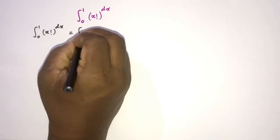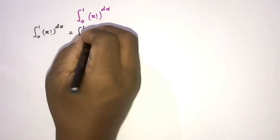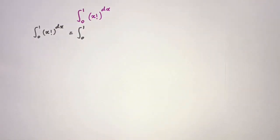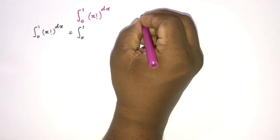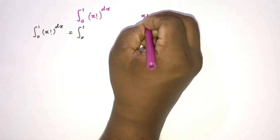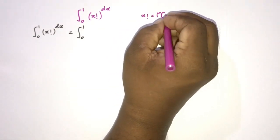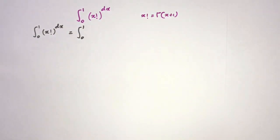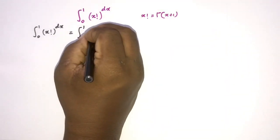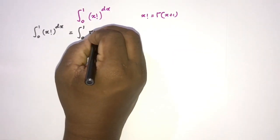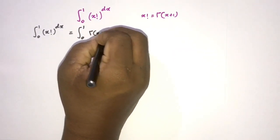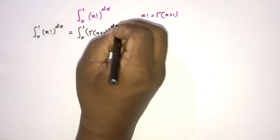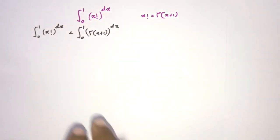We can write this as the integral from 0 to 1 of gamma of x plus 1, raised to the dx, since x factorial equals gamma of x plus 1.